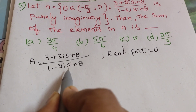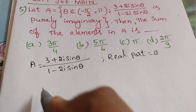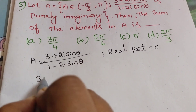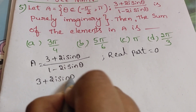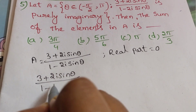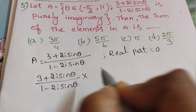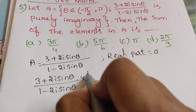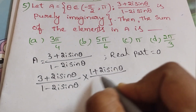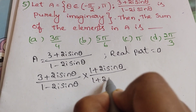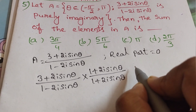If they mention purely imaginary, real part equals zero. If they mention purely real, imaginary part equals zero. So we simplify the given expression. The denominator has an imaginary component, so we rationalize the denominator by multiplying by (1 + 2i sin theta) divided by (1 + 2i sin theta).